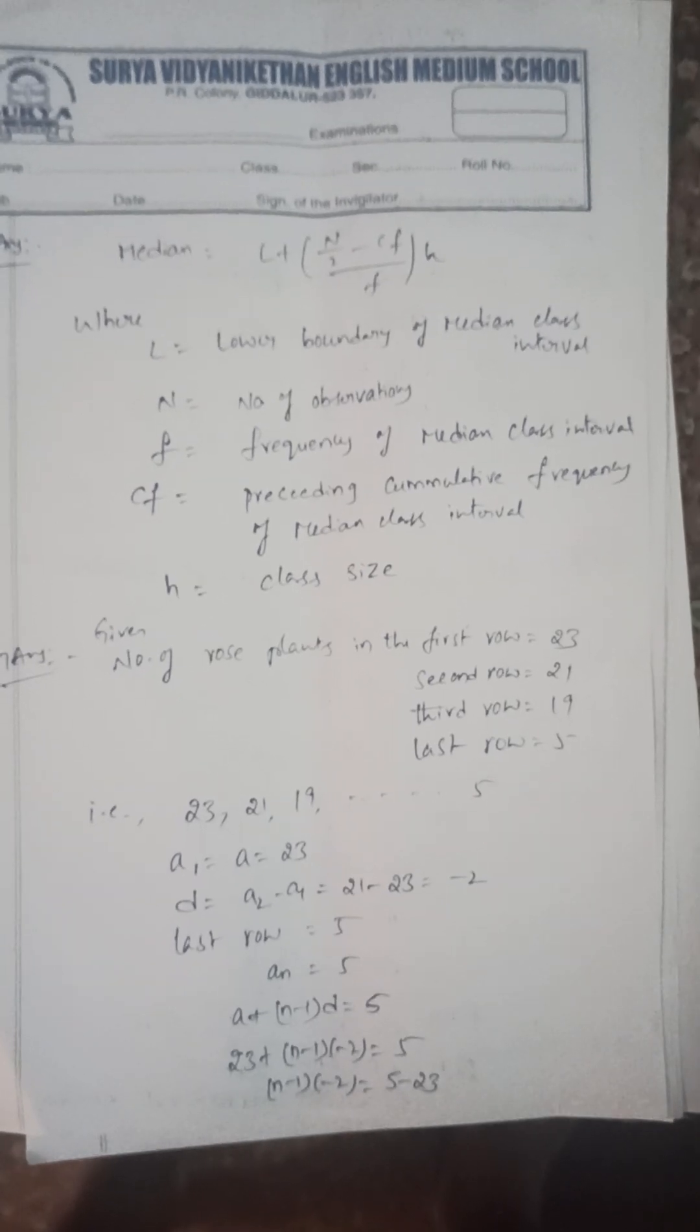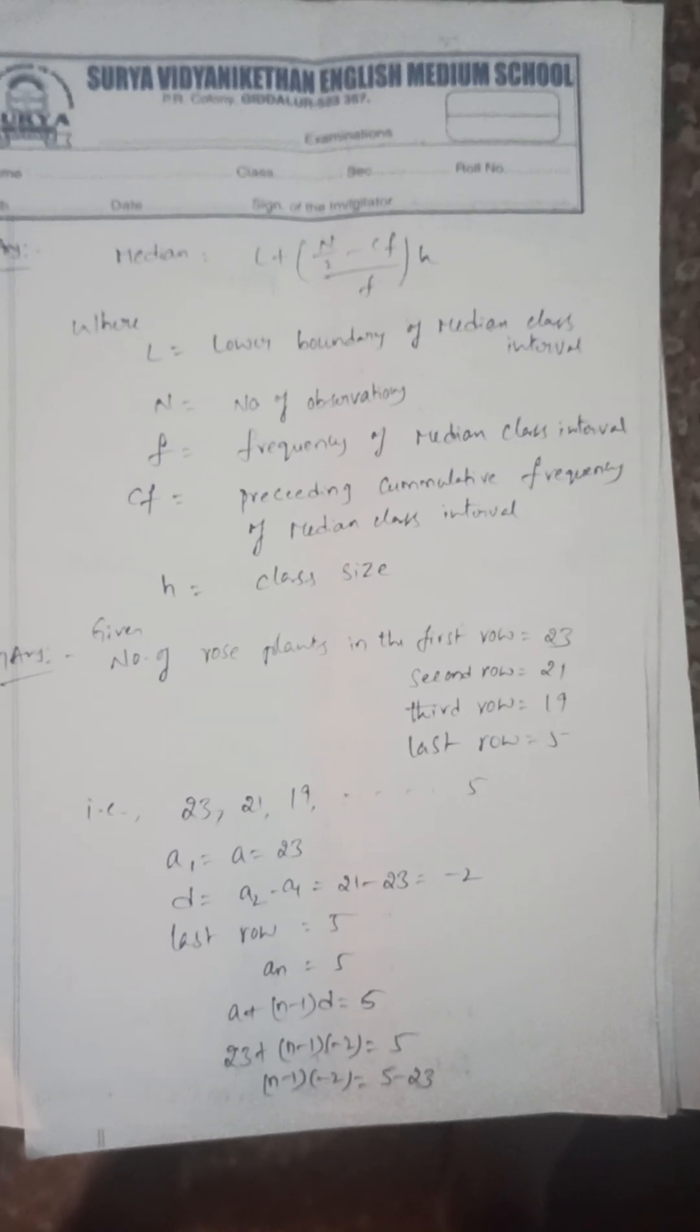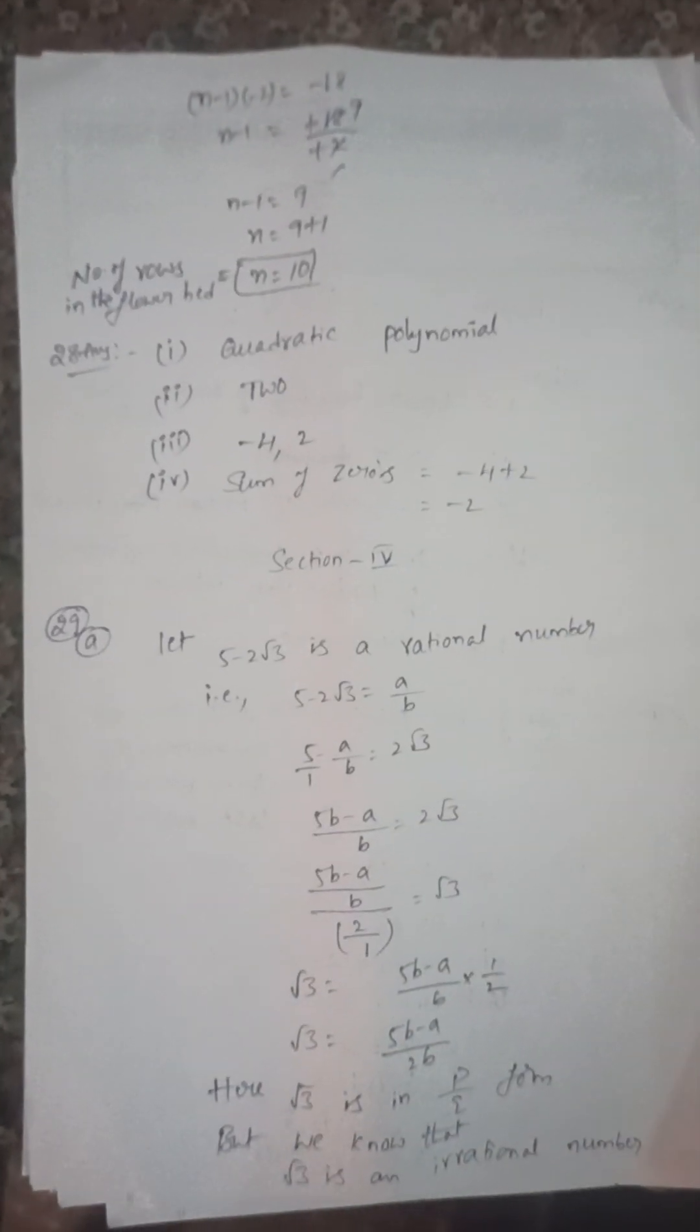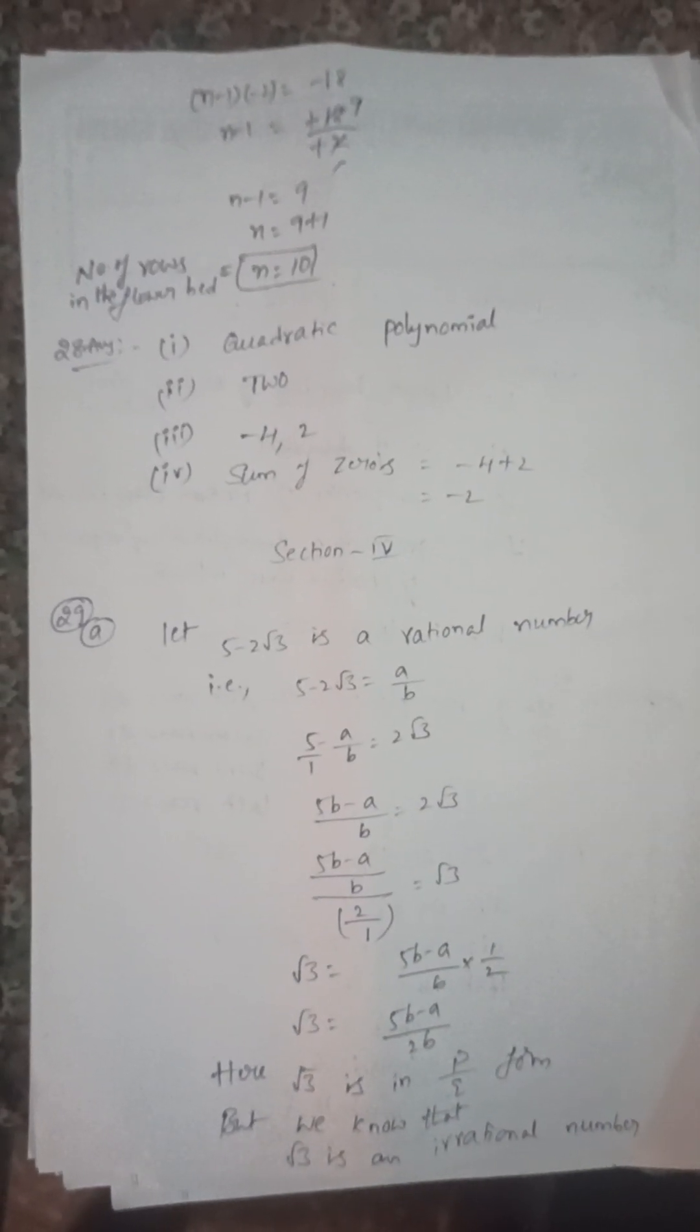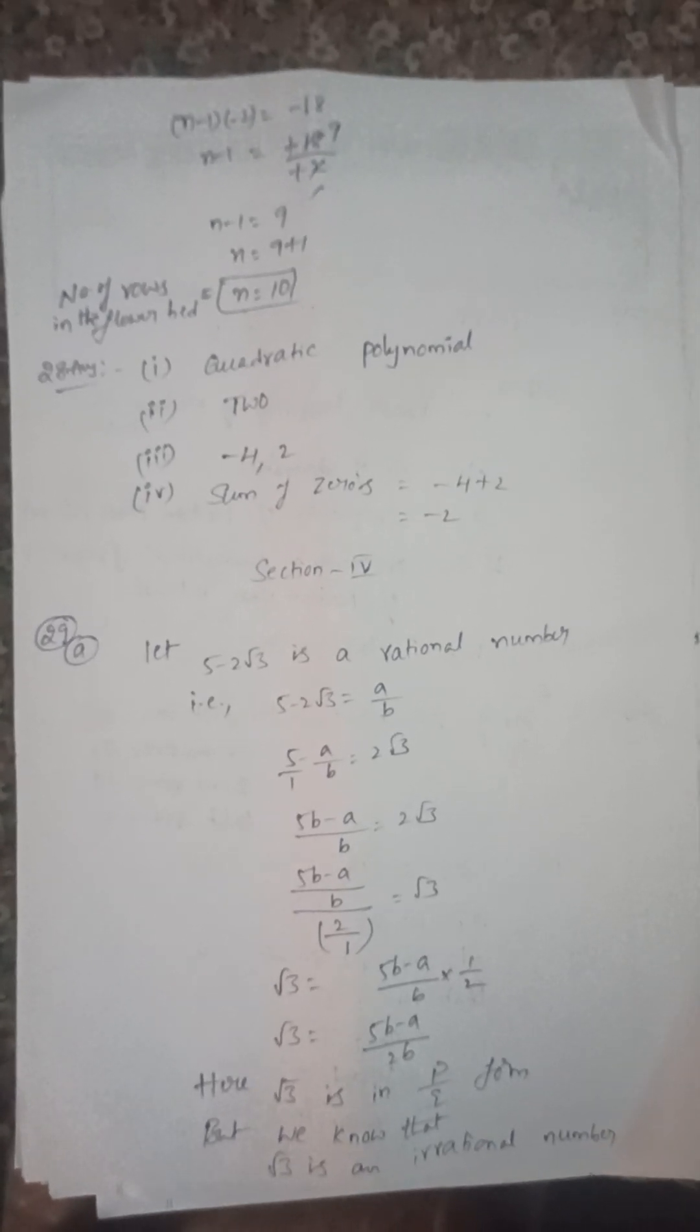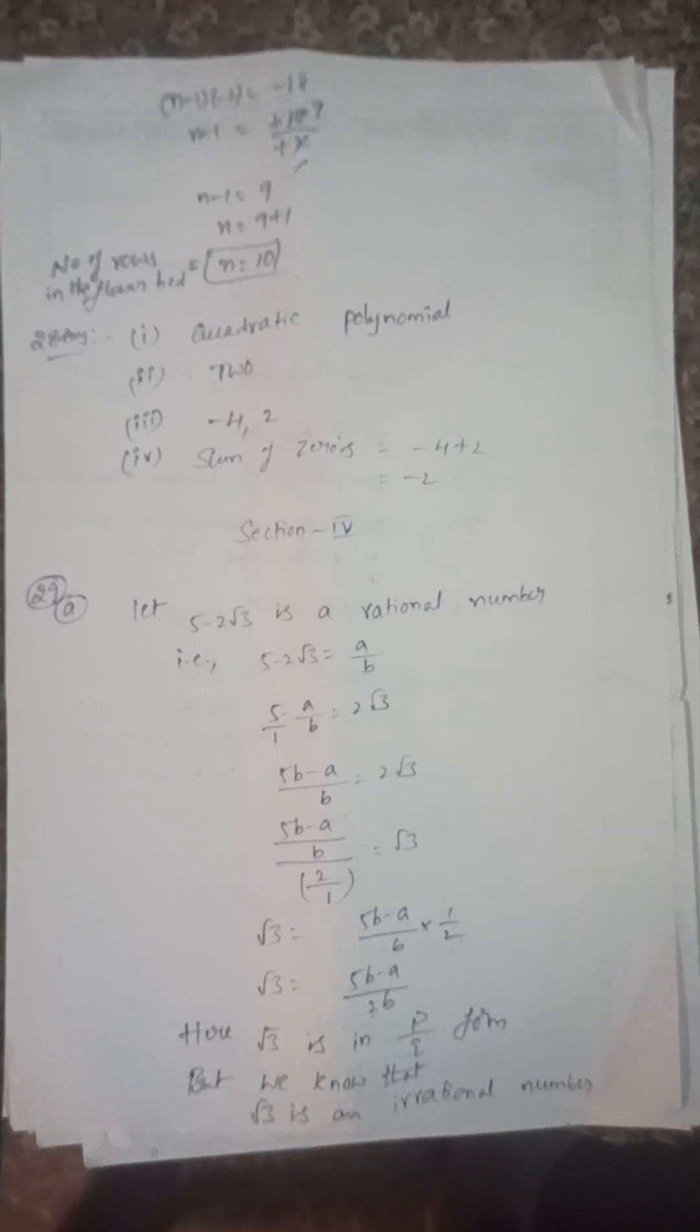Next, quadratic polynomial graph: number of zeros (-4, 2). Sum of zeros is -2. Next, prove that 5 - 2√3 is an irrational number.